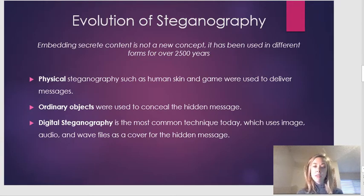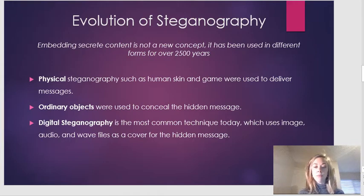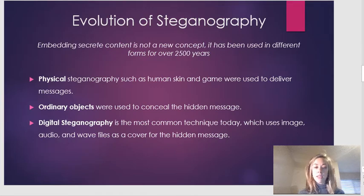Ordinary objects were also used to conceal hidden messages. In ancient Greece, messages were carved into the wooden backing of a wax tablet, and wax would be poured over the message to conceal it; once received, the wax was melted, revealing the message in the wood. During World War II, information was concealed using microdots or microfilm chips — dots the size of a period on a standard typewriter that could contain pages of information or drawings. Invisible ink, which remains invisible until developed, was also used during the war; the message could be disguised on a piece of paper containing other non-sensitive information.